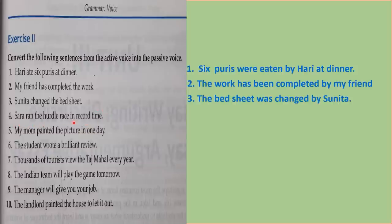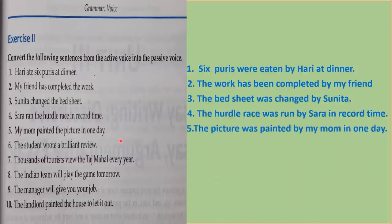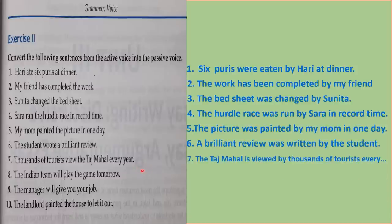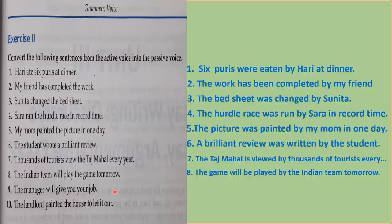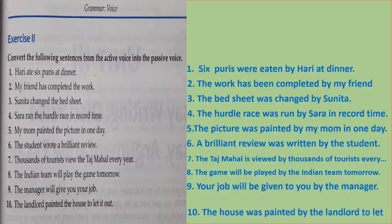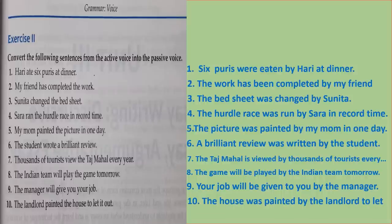'Sarah ran the hurdle race in record time' → 'The hurdle race was run by Sarah in record time.' 'My mom painted the picture in one day' → 'The picture was painted by my mom in one day.' 'The student wrote a brilliant review' → 'A brilliant review was written by the student.' 'Thousands of tourists view the Taj Mahal every year' → 'The Taj Mahal is viewed by thousands of tourists every year.' 'The Indian team will play the game tomorrow' → 'The game will be played by the Indian team tomorrow.' 'The manager will give you your job' → 'Your job will be given to you by the manager.' 'The landlord painted the house to let it out' → 'The house was painted by the landlord to let it out.'